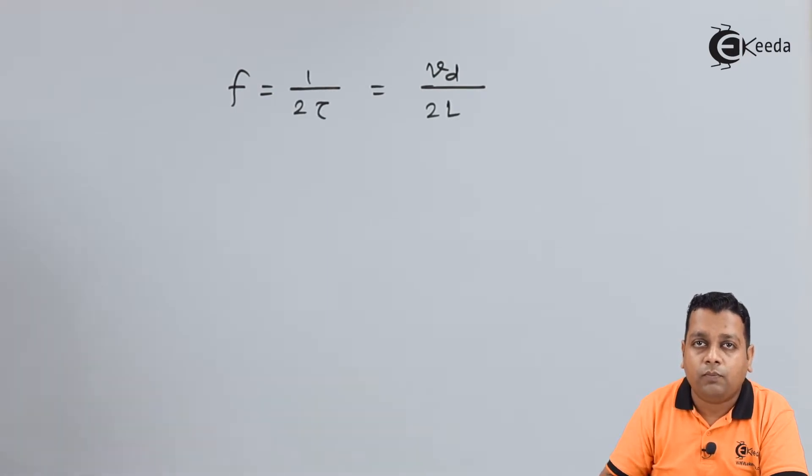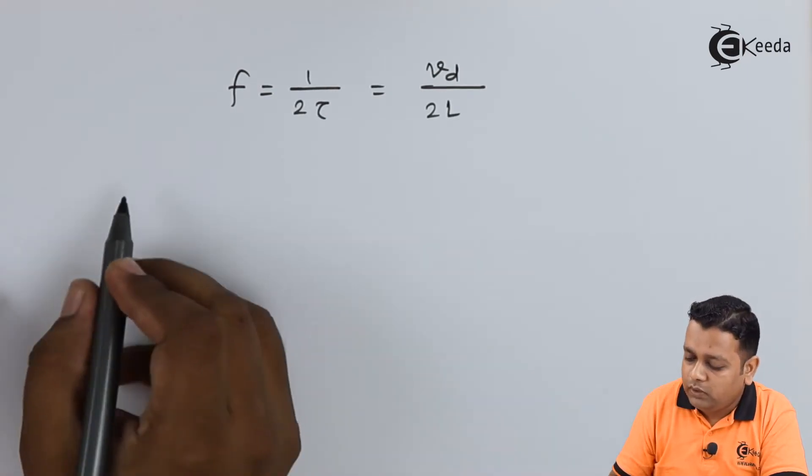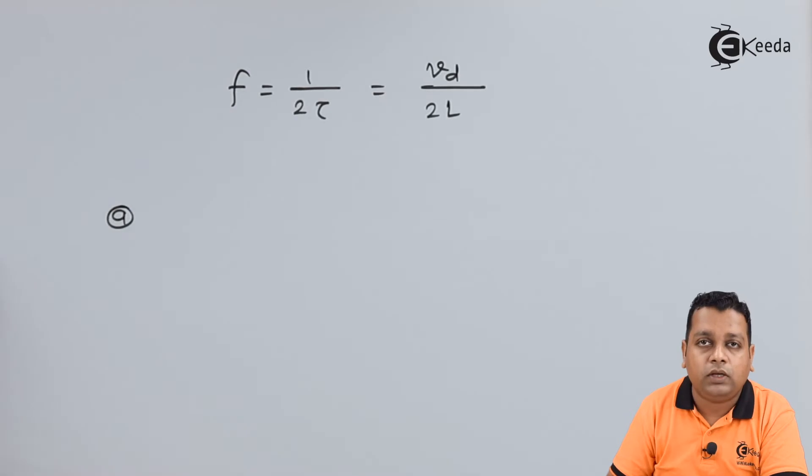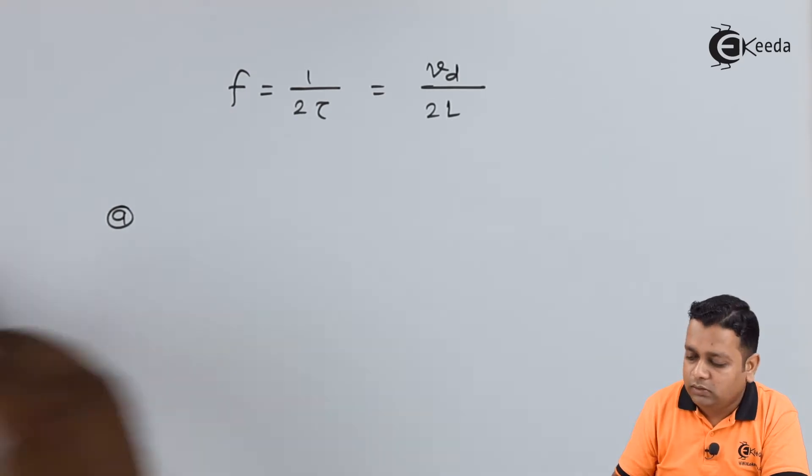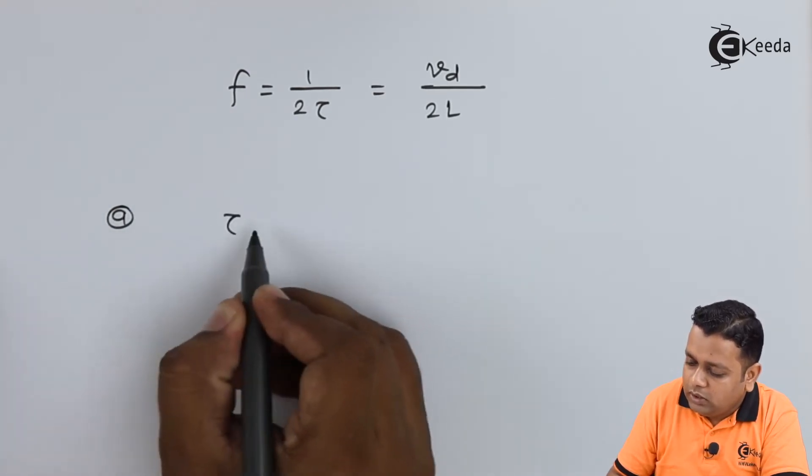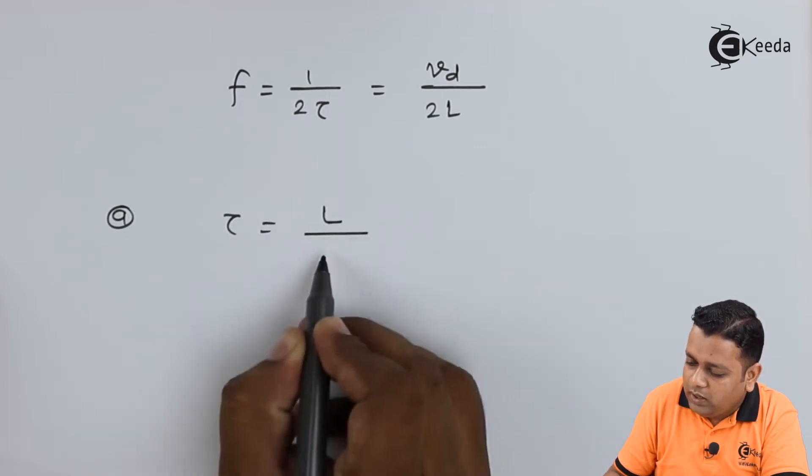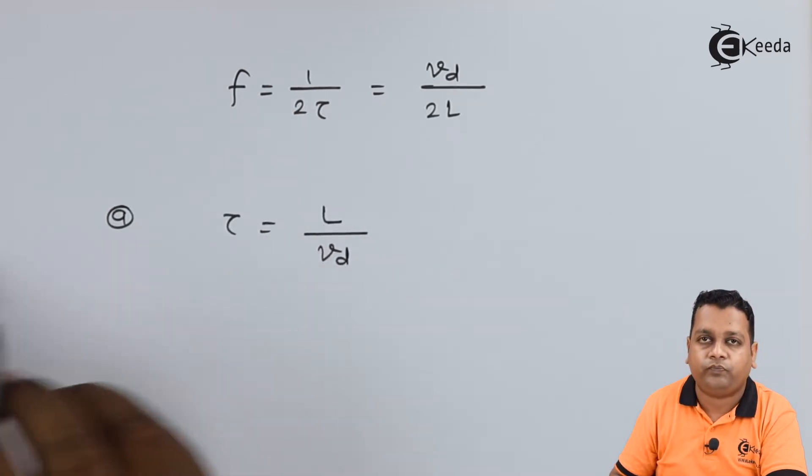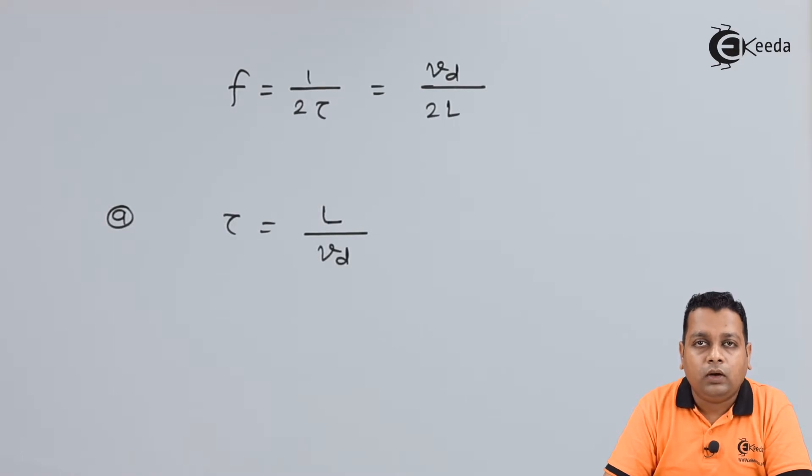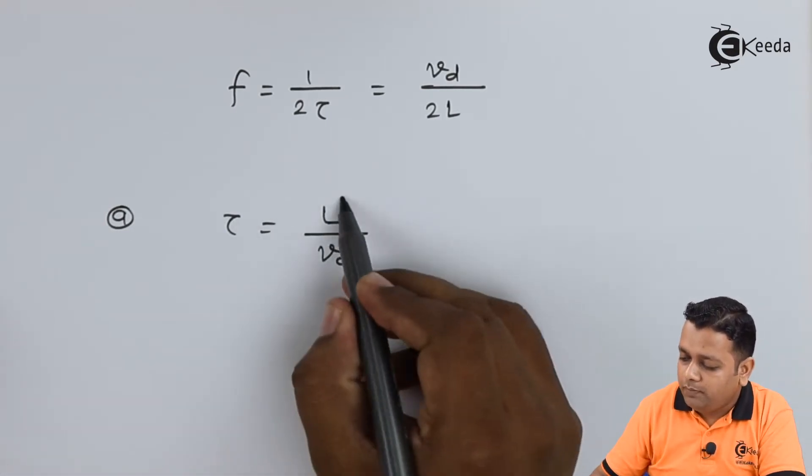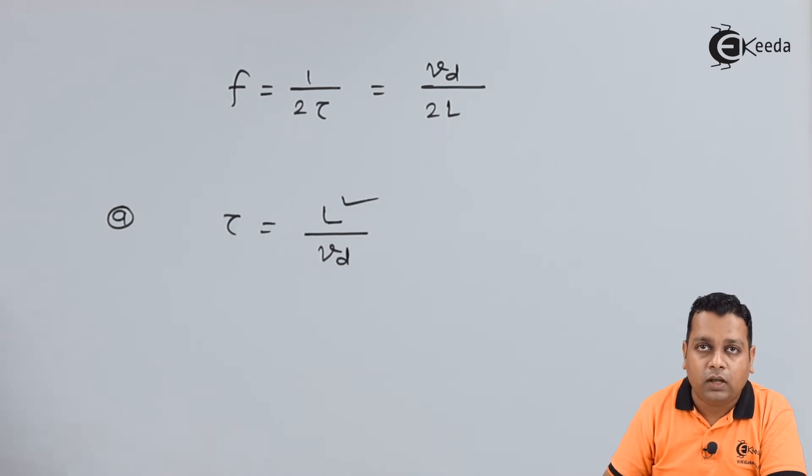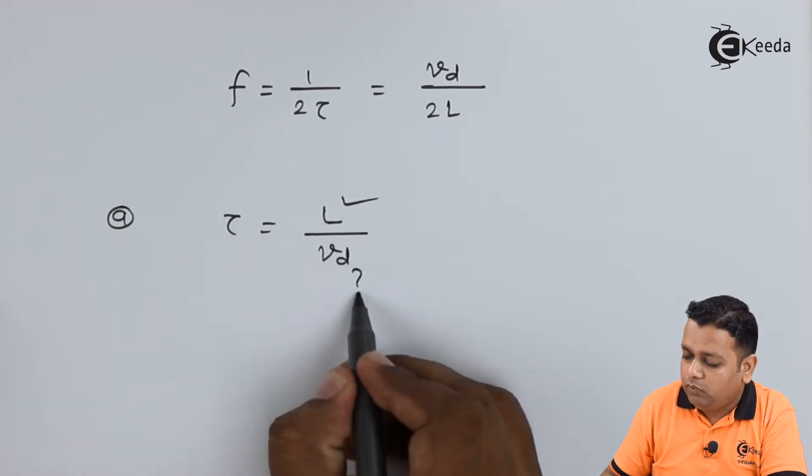Therefore, for computation of the time in part A, we can have a simple formulation from the above that tau is equal to L divided by Vd. In the given problem statement, we have been provided with the value of L equals 2 micrometers, but Vd is not provided.